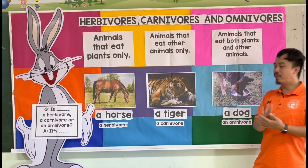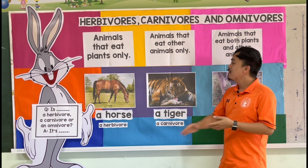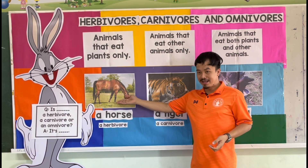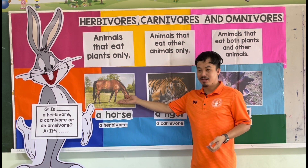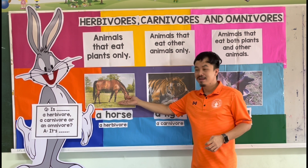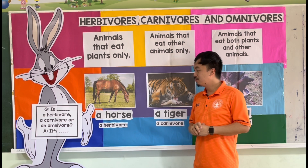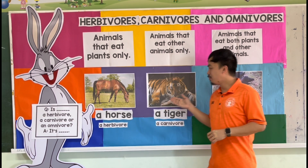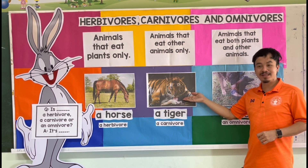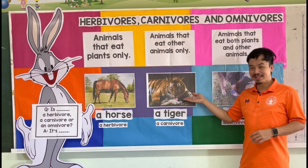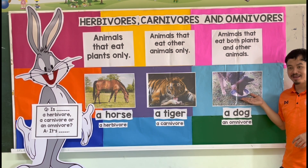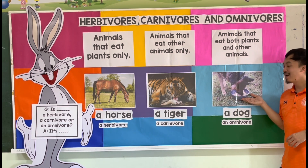There you go — we have three examples. What is this? This is a horse. What animal is it? It's a tiger. What animal is it? It's a dog.